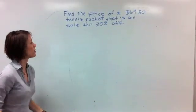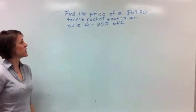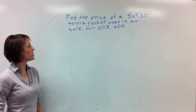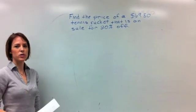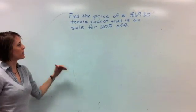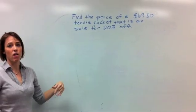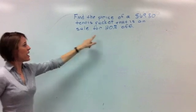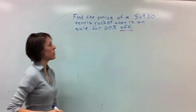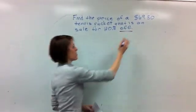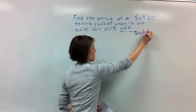Alright guys, we're on to example three. It says, find the price of a $69.50 tennis racket that is on sale for 20% off. So first thing you have to ask yourself when you're reading this question is are they asking us to tack something on or take it off? So we're talking about something that's on sale and it's 20% off. So that means when we're all said and done, we're going to subtract. We're going to take it off. So this means subtract.